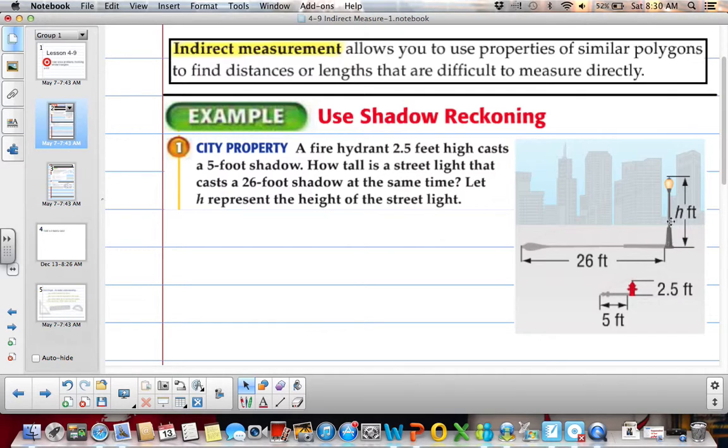How tall is a street light that casts a 26 foot shadow at the same time? So here's our street light, and here's our 26 foot shadow. And we named our street light H.